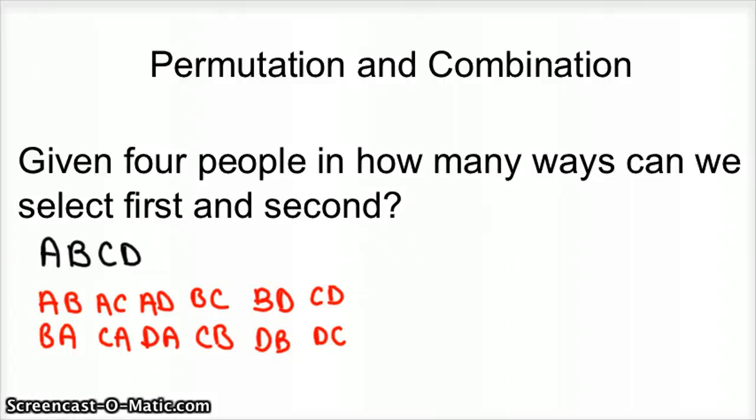And so how I knew that it was 12 is, I knew that this is a permutation. In a permutation, we're going to count when order matters. So it matters when A is first and B is second, or B is first and A is second. And how we list a permutation is something like this. It could be N and then a capital P with a subscripted R, also listed as P and then parentheses N, comma, R.